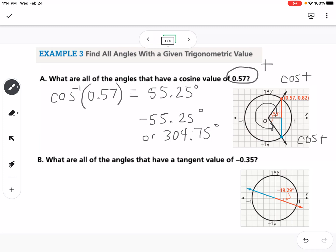So part B, we're going to do the same thing. So what are all the angles that have a tangent of negative 0.35? So to start with, we find our first calculator value. So we type in the inverse tangent of negative 0.35 and we get negative 19.29 degrees. Now we know that's in the fourth quadrant and that our tangent's negative in the fourth quadrant.